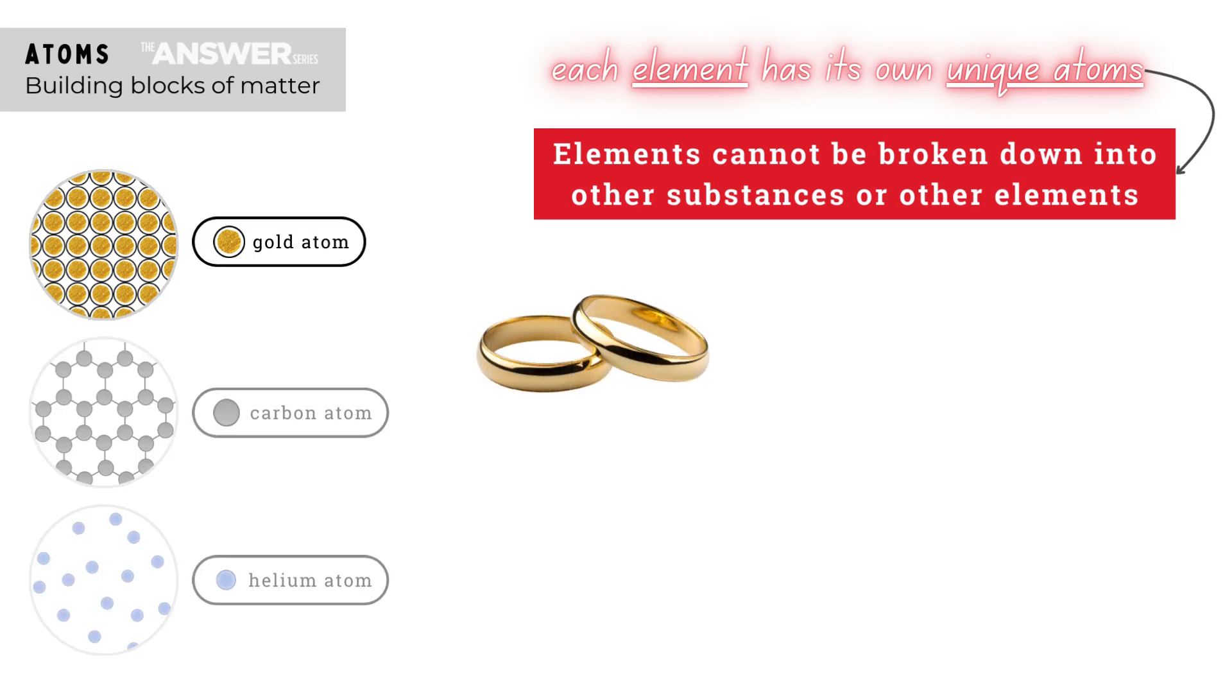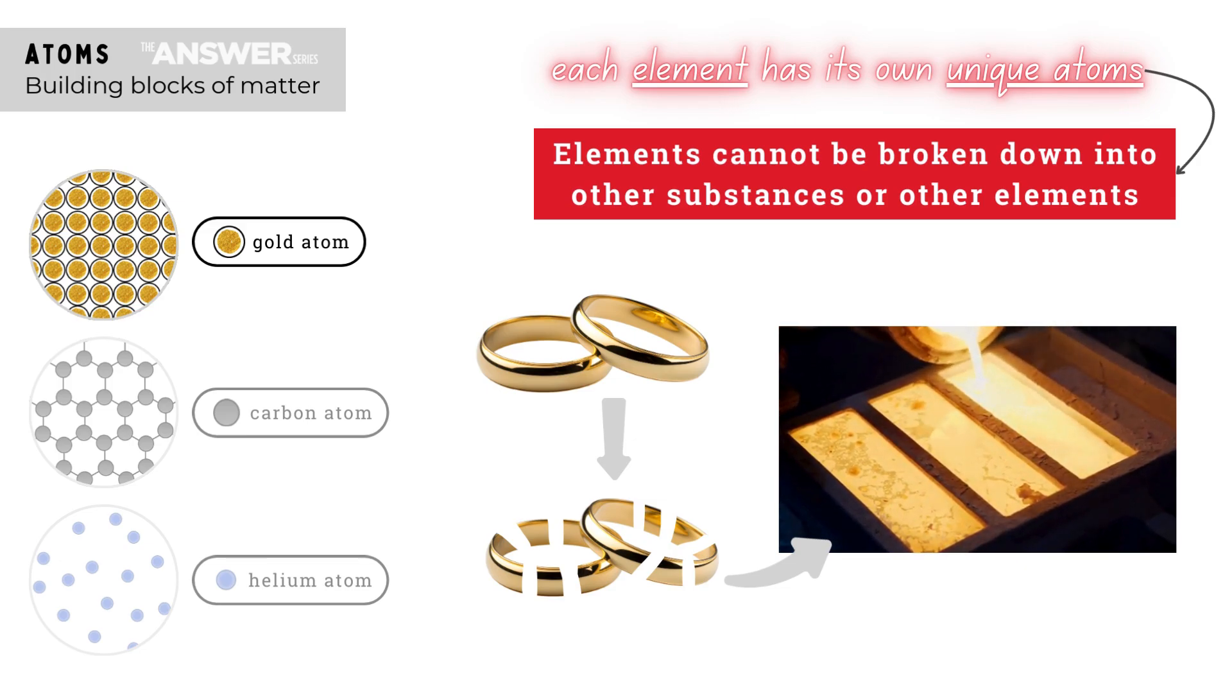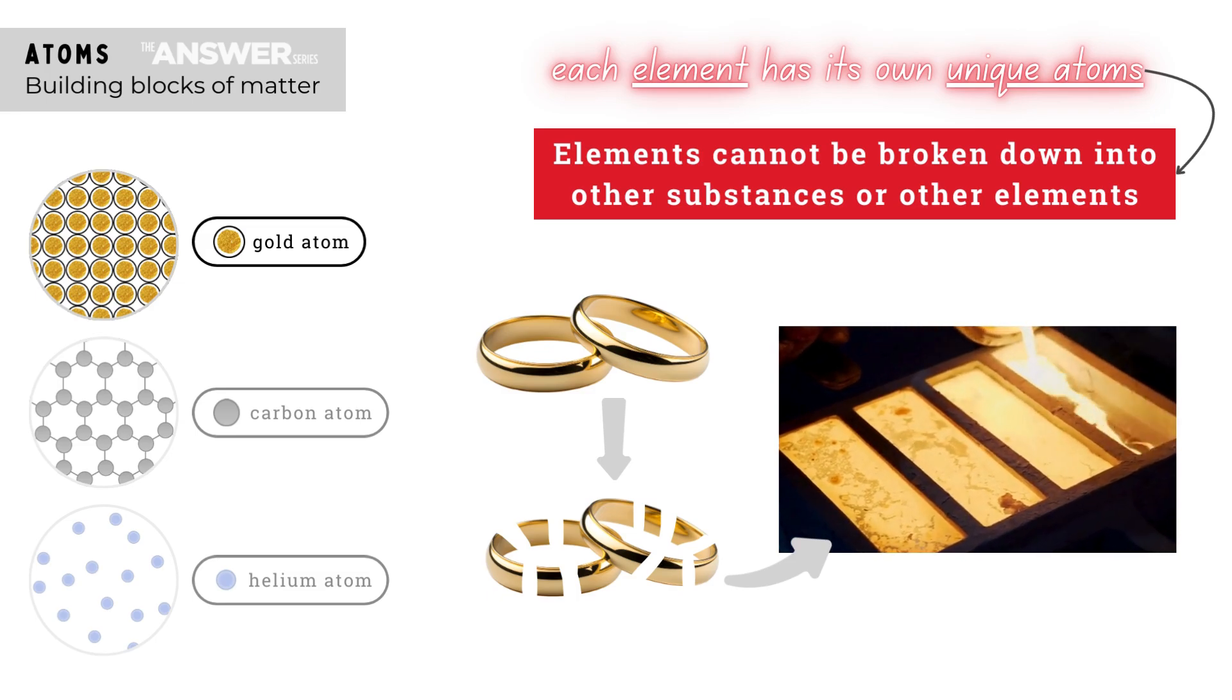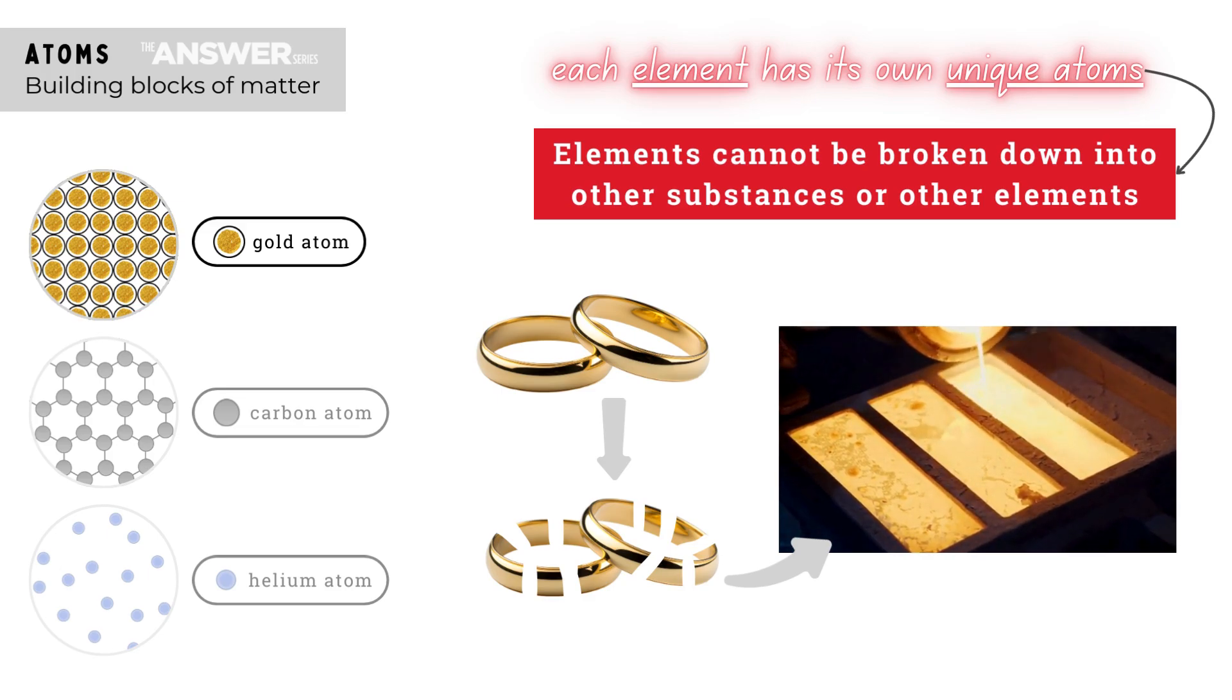This means that if we take our gold ring and we break it into little pieces, each piece would still only contain gold atoms. And even if I were to melt these gold pieces, I would simply have liquid gold made up of gold atoms only. At no point during the breaking down of this gold do I suddenly have other atoms or substances that appear.